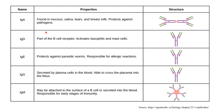IgA is found in mucus, saliva, tears, and breast milk. It protects against pathogens. IgA from mother's breast milk transfers immunoglobulin to the baby.